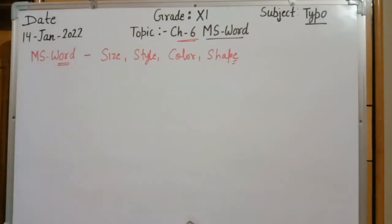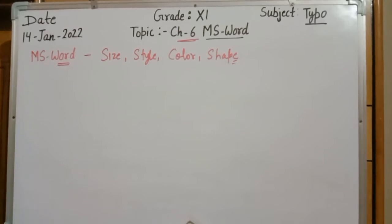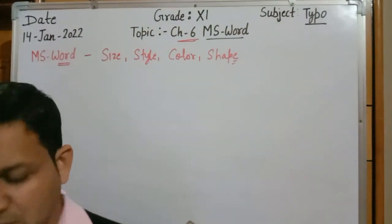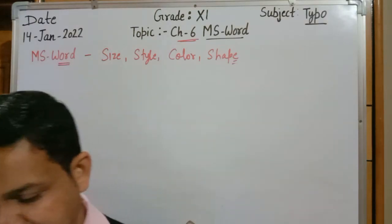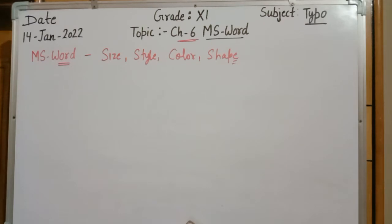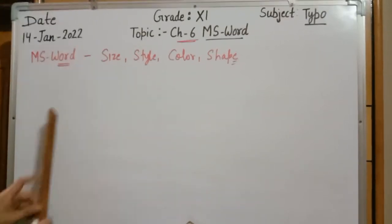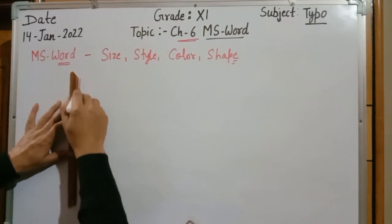Multiple types of documents with different shapes can be created and edited in MS Word. Now, tables and graphics are features of MS Word in which we can create a new table or prepare any type of graphical tool. In graphics, we can add photographs, pictures, and shapes. Now we come to the main part: the application window view of MS Word.